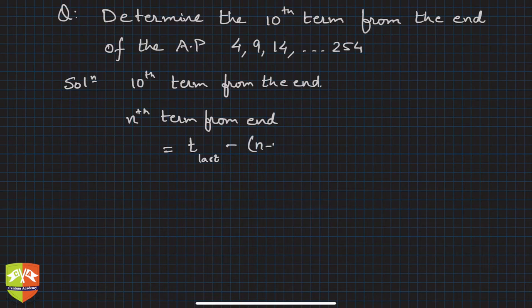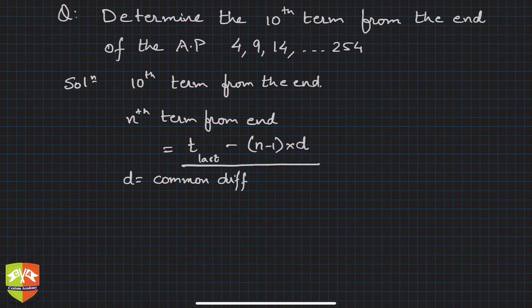Minus (n-1) times d, where d is common difference. We had derived this in the theory portion. The formula is t_last minus (n-1) times d, where d is common difference.